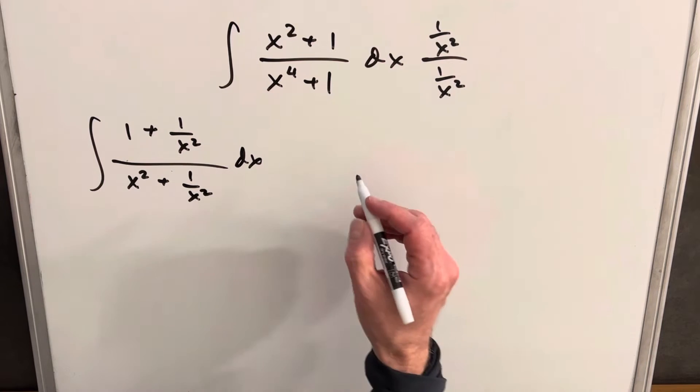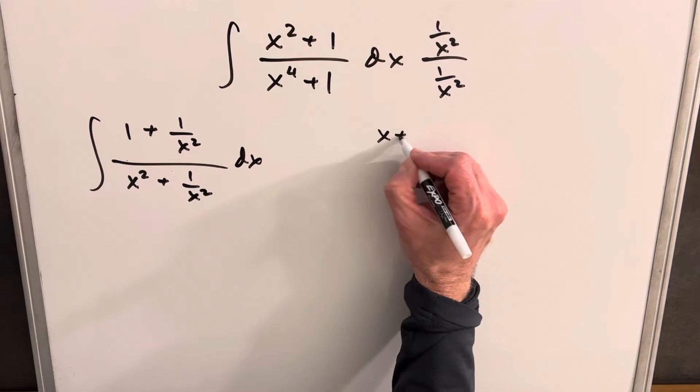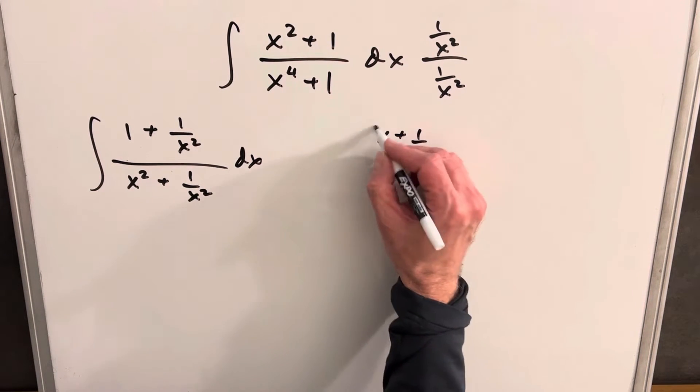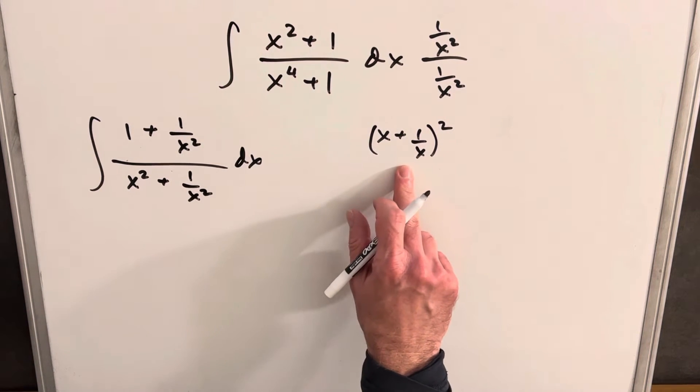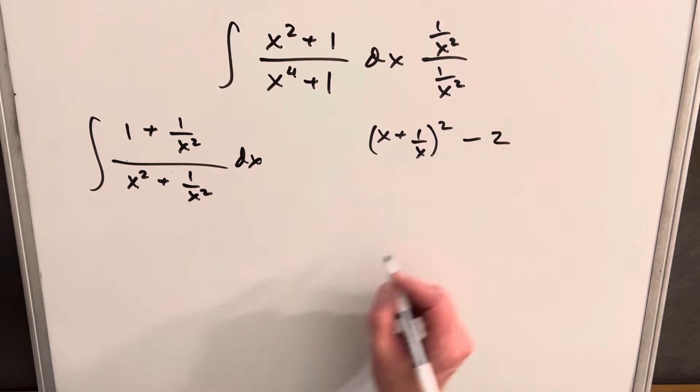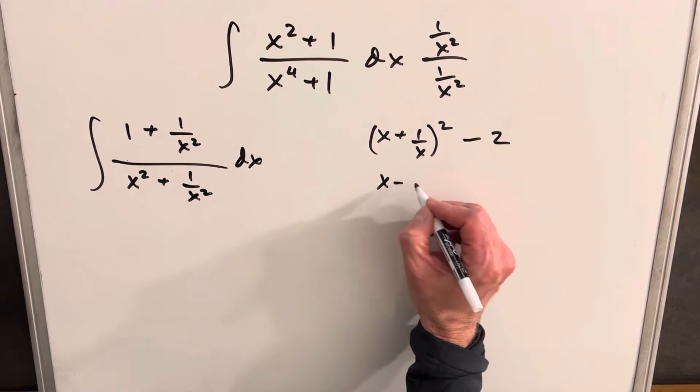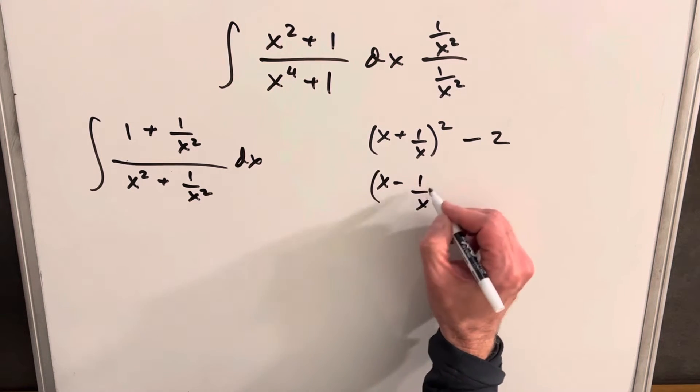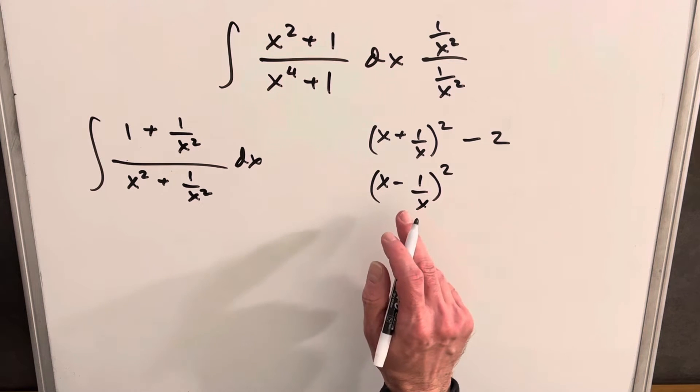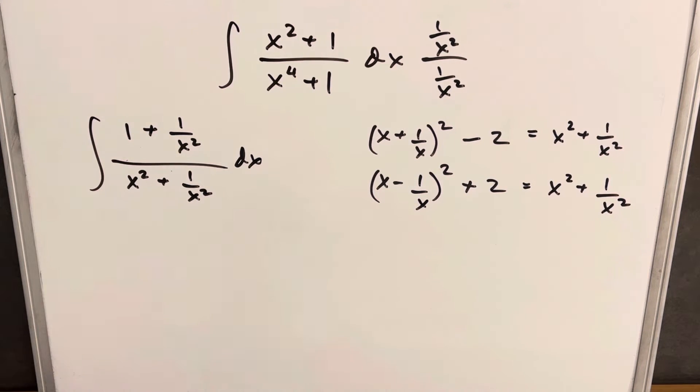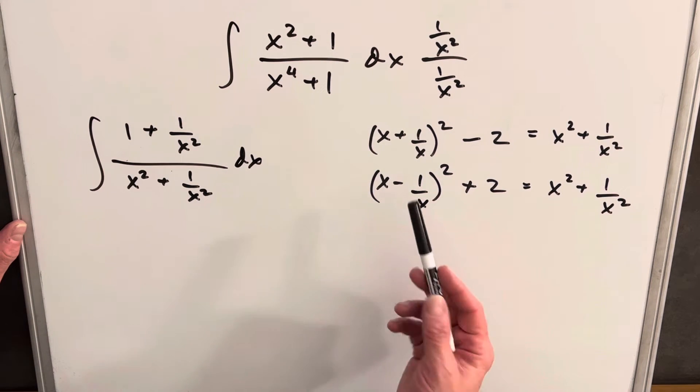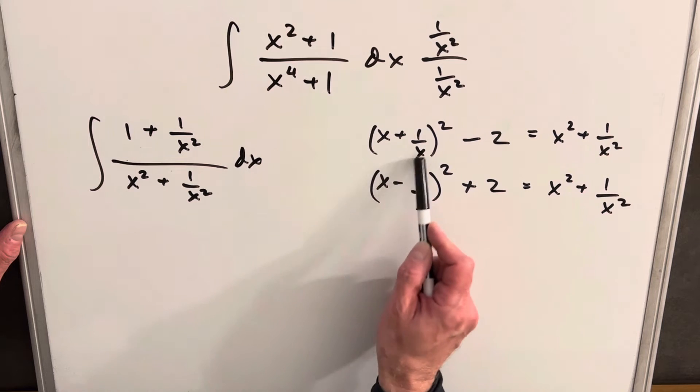Now for this piece, there's two good ways to factor this. Let's look at this. We could write this as x plus 1 over x squared, and then we're going to get an additional 2 and we could just subtract that off. Or we could write this as x minus 1 over x squared. Here we get a minus 2, so we're going to have to add 2.